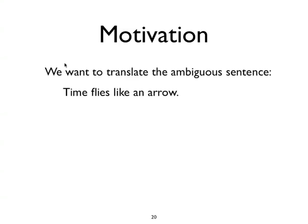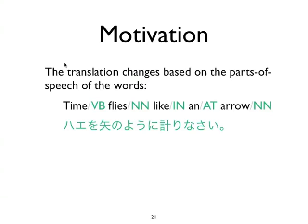For example, if we know that 'time' is a verb and 'flies' is a noun and 'like an arrow' is a prepositional phrase, then we have an imperative command to measure the time of flies somehow like an arrow. If we translate this into Japanese we might get the sentence 'hayo yad no yoni hakarinasai,' which may not make very much sense — but neither does this interpretation of the English sentence.